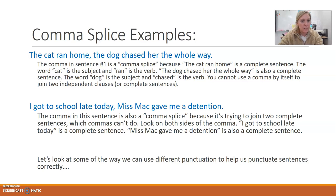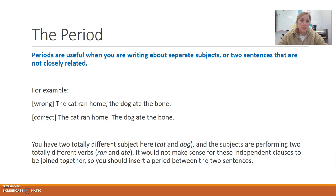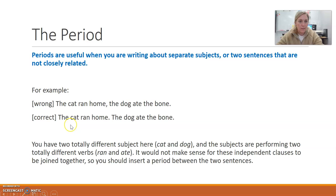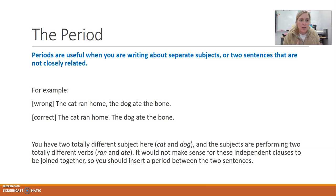So we can look at some ways to fix these types of sentences to make them grammatically correct. First of all, you can separate the two sentences completely by using a period. Periods are useful when you are writing about separate subjects or two sentences that are not closely related. For example, the wrong way is a comma splice: 'The cat ran home, the dog ate the bone.' The correct way is: 'The cat ran home. The dog ate the bone.' You use a period here because you have two completely different subjects and verbs — a cat running and a dog eating — they're not closely related. But no matter what you choose, you cannot only use a comma, because that would be a comma splice.